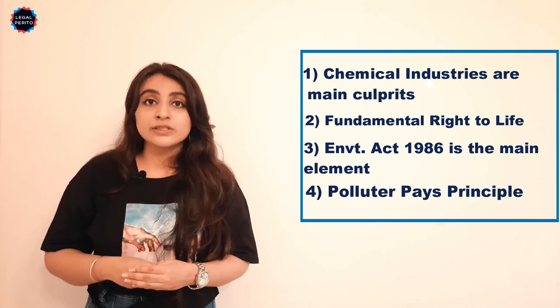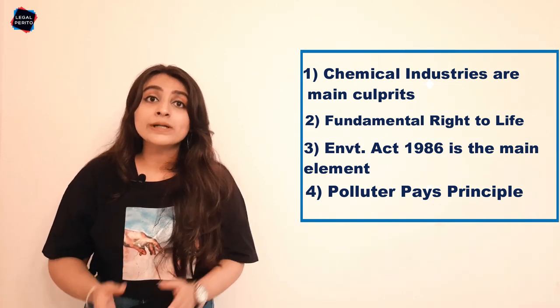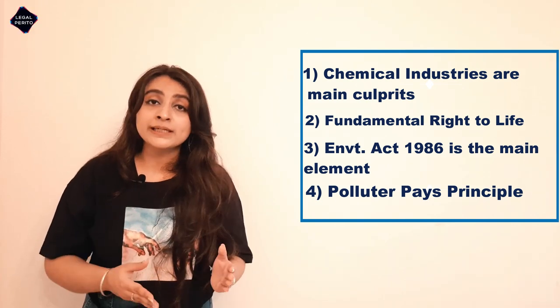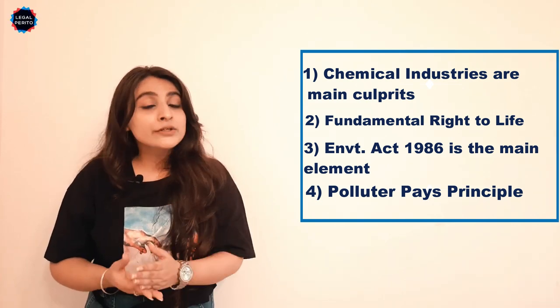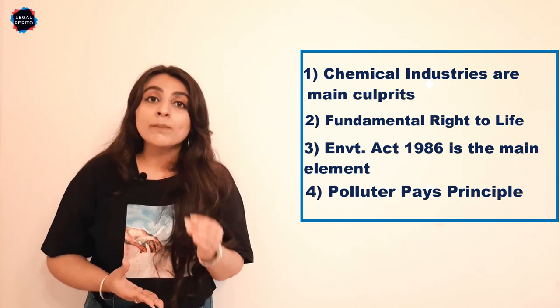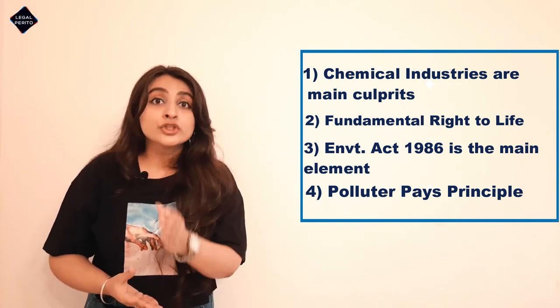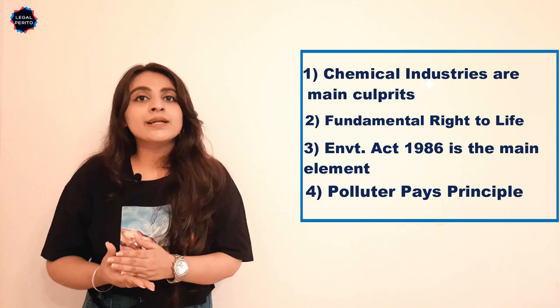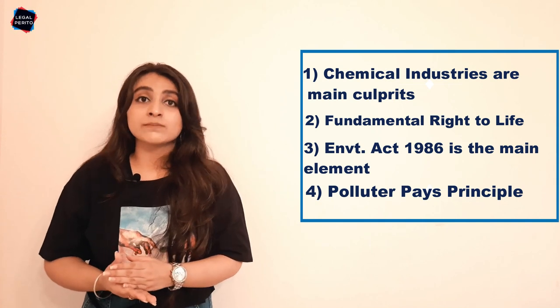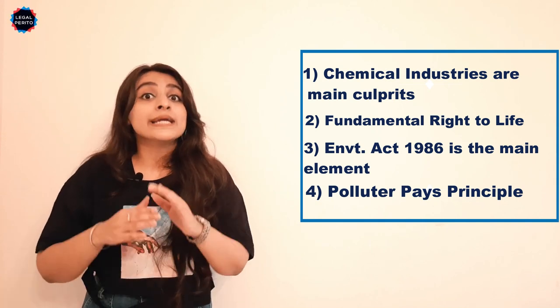In 4 cheezein observe karne ke baad, Supreme Court ne judgment di aur central government ko bola compensation ke amount ko determine karne ke liye, jo chemical industries victims ko pay karengi, aur inhi factories ko band karane ka order diya.